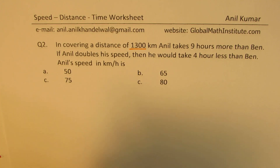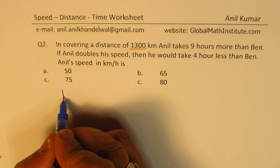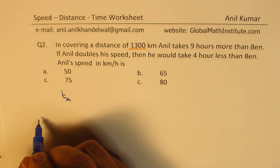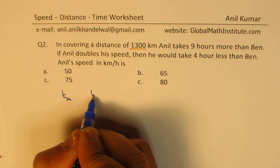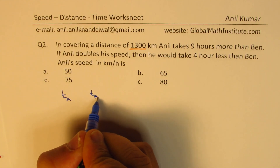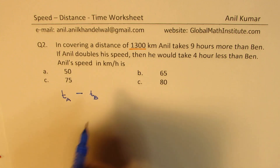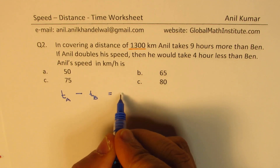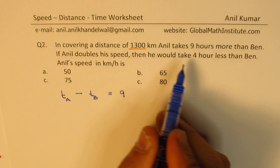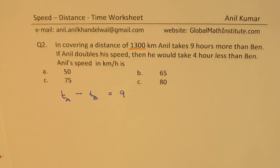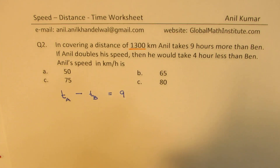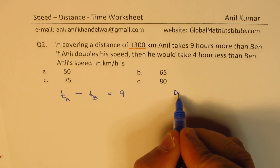Let's apply our strategy. T_A is the time Anil takes and T_B is the time Ben takes. The difference between these two times is nine hours — so T_A minus T_B equals 9. That is our first equation. The second part: if Anil doubles his speed, double speed means half time.